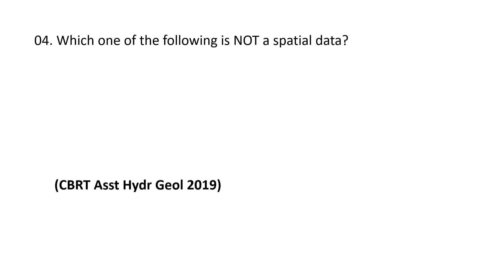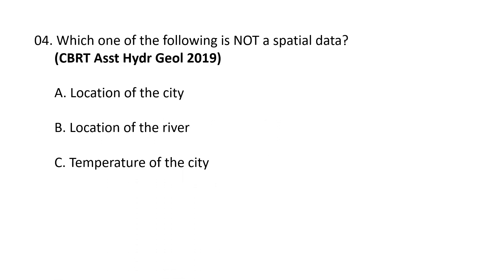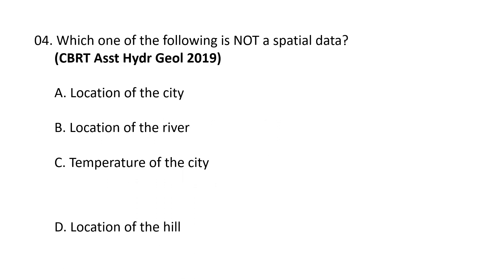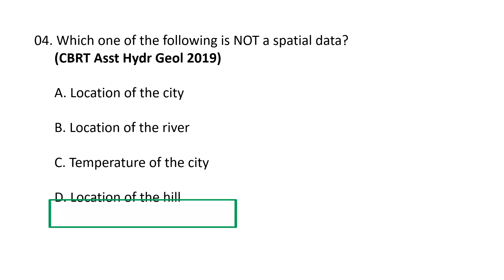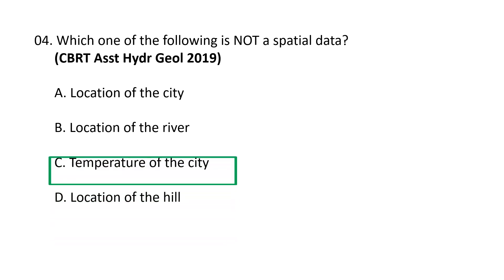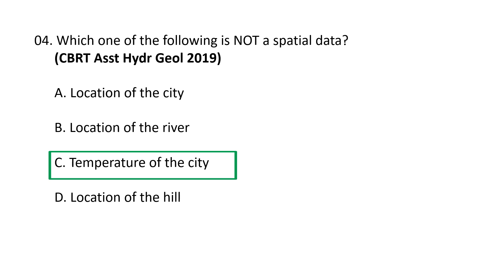Next question: which one of the following is not a spatial data? A) Location of the city, B) Location of the river, C) Temperature of the city, and D) Location of the hill. Obviously, temperature of the city is not spatial data. C is the correct option.